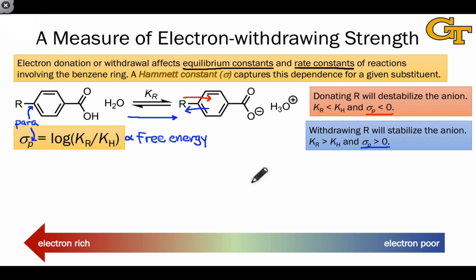To help clarify the meaning of sigma-P, let's lay down some important types of substituents on our continuum from electron-rich and electron-poor and look at their sigma-P values. By convention, hydrogen is defined as right in the middle of this scale. For hydrogen, the sigma-P is equal to 0, since the ratio of K sub H to K sub H must be 1, and its logarithm must be 0.